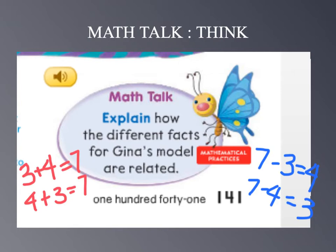Alright, think back to what we just did with Gina's model. We decided that we had four different facts that we found. We had 3 plus 4 equals 7, or we had 4 plus 3 equals 7, and then for subtraction facts, we had 7 minus 3 equals 4, or 7 minus 4 equals 3. How are these different facts related? They are related because all of the facts have the same whole, which is 7, and the same parts, 3 and 4.